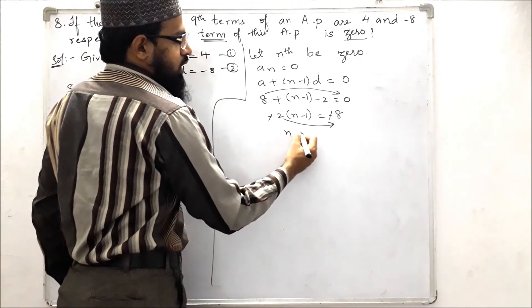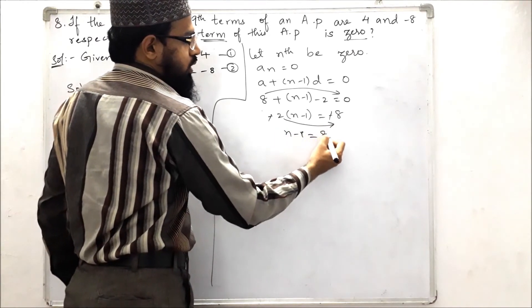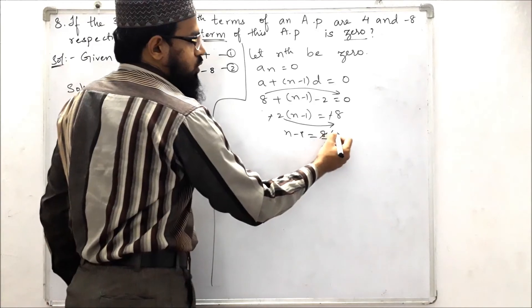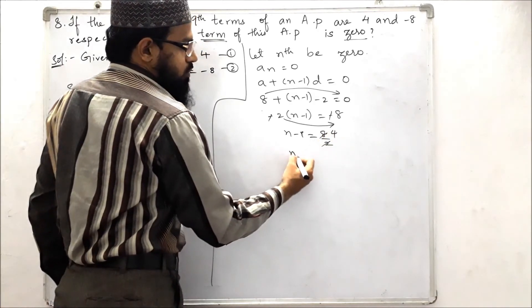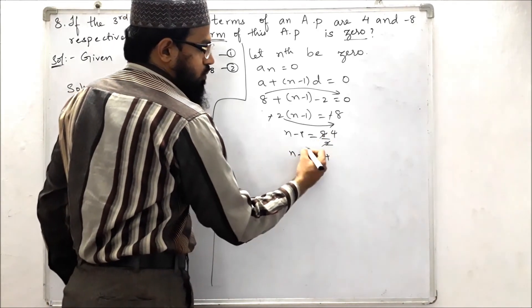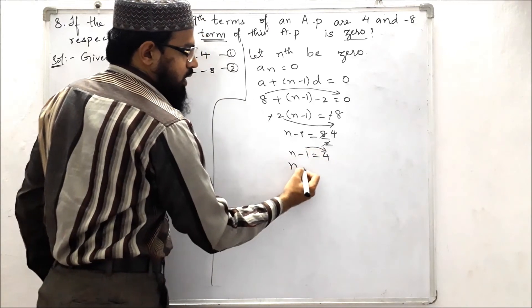Minus signs cancel. Send this 2 to the denominator. N minus 1 is equals to 8 by 2, which is 4. So n minus 1 is equals to 4.